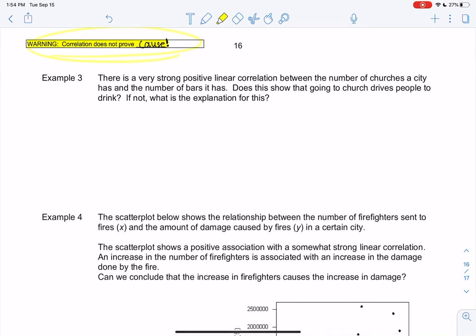There's a very strong positive linear correlation between the number of churches a city has and the number of bars it has. So basically, if I were to draw a graph with churches compared to bars, it would be a very strong positive line. Does this mean that going to church is making people drink? That's what cause means. I don't think that's true.